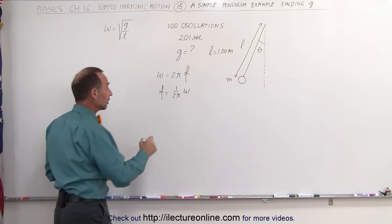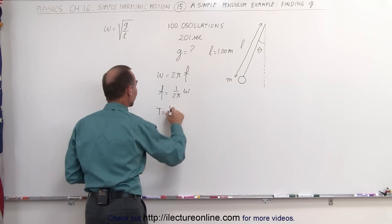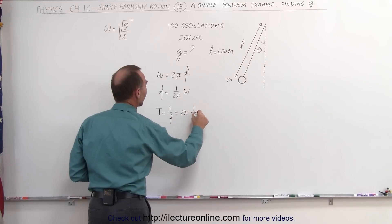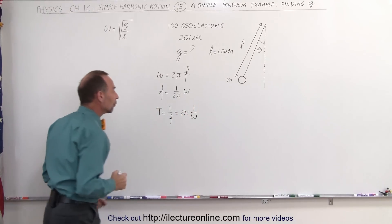And since the period is equal to 1 divided by the frequency, the inverse of the frequency, this can then be written as 2π times the inverse of omega, 1 over omega.